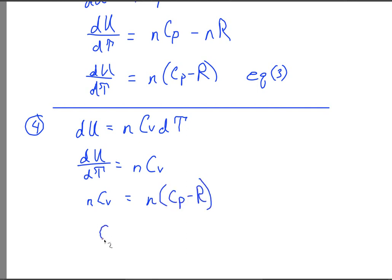Well, look at that. The n will simply drop out from both sides and that will be Cp minus R. And then we can say Cp is equal to Cv plus R.